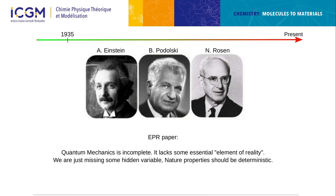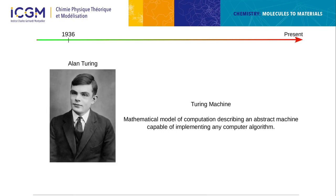For Einstein, Podolsky and Rosen, nature should be deterministic. We will see later that they are wrong, and we can also provide proof of that during this lecture.